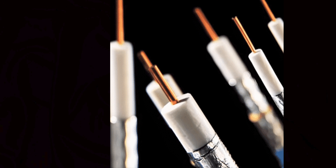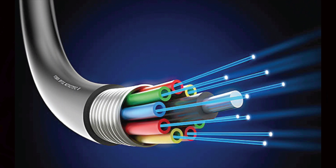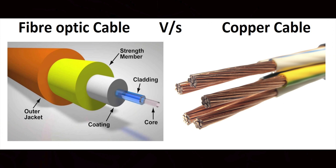Next, you can choose optic fiber or copper. Copper is an older technology, while optic fiber is the latest. Comparing the two, optic fiber is much faster because it transfers data using light, whereas copper transfers using electricity. However, optic fiber cable is more costly.